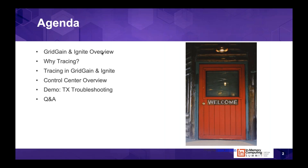The agenda for today: I'll give a brief overview of what GridGain and Apache Ignite are. Then we'll get into why application tracing is useful, especially in distributed systems. We'll cover how tracing has been implemented in GridGain and Ignite, how we set it up, and then look at a use case of debugging a slow-running transaction using GridGain Control Center — collecting application traces, looking for slow API calls, and ways to debug and resolve it.